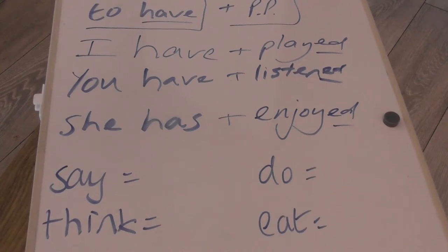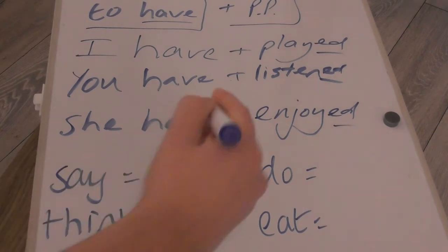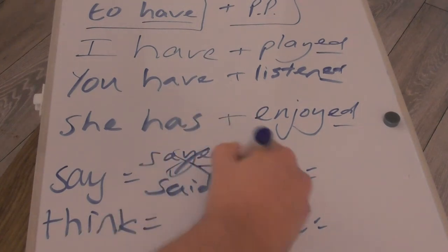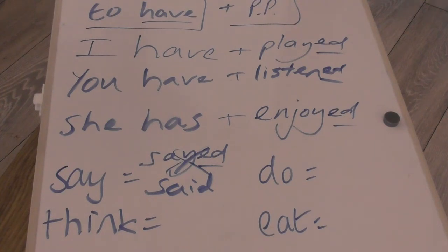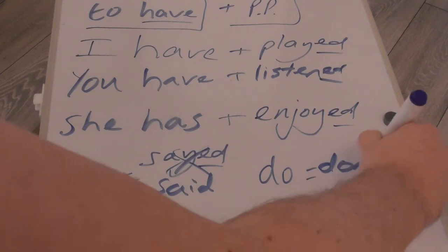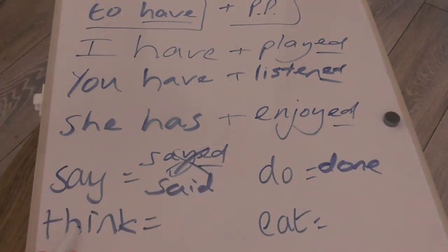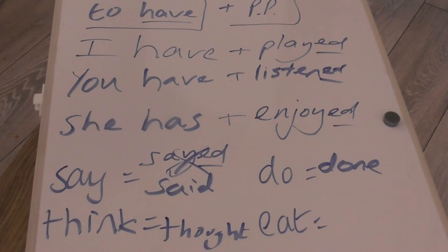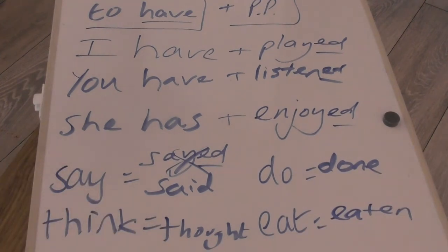For irregular verbs, and there are many in English, you wouldn't say for the perfect tense I have said with ED added, because to say is irregular — we actually say said. What about do? Not I have do'd — I have done. I have thought, not I have think'd. And what about eat? Not I have eat'd or I have ate — I have eaten. So we do have a lot of irregulars in English, and we're going to see what we do with those equivalents in Spanish as well.